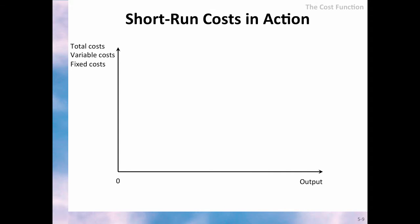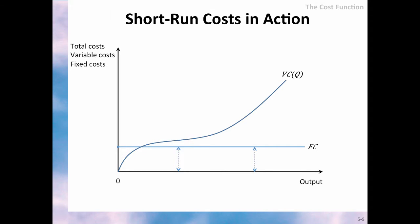This graph shows how costs operate in the short run. Fixed costs are constant and shown as a horizontal line, meaning they are independent of the level of output. Variable costs start at zero but increase with output, and total costs are obtained by adding fixed costs and variable costs.